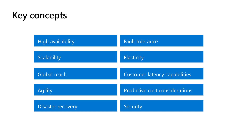Elasticity is the ability of a system to resume its normal shape after being stretched or compressed. When your system or application receives high amounts of demand, you want it to scale out or scale up to accommodate that demand. But when that demand no longer exists, you want that system to scale back or scale down so that you're not paying for resources that aren't being used. That is elasticity.